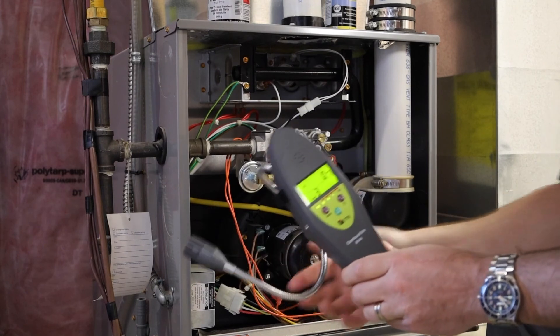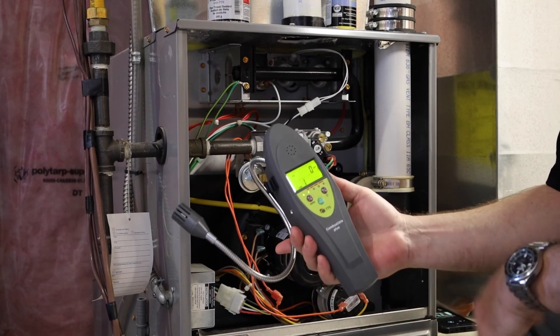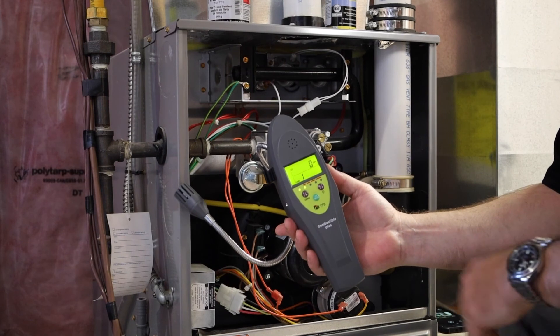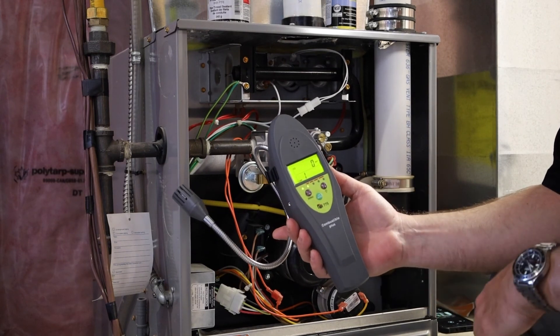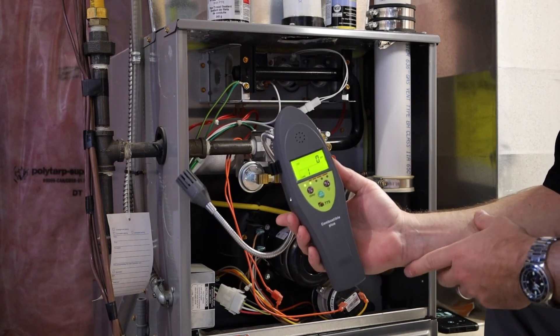So the 775, you're killing two birds with one stone. You're measuring a combustible gas leak detector, and it's never a bad thing to measure CO.